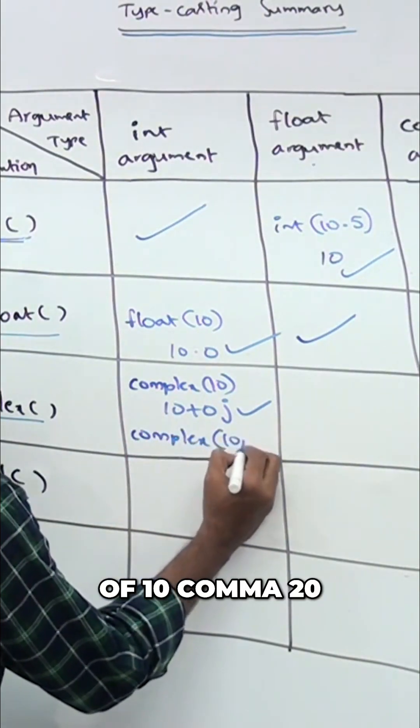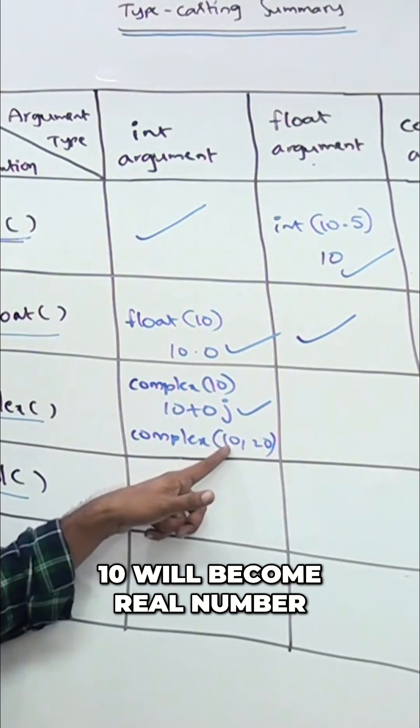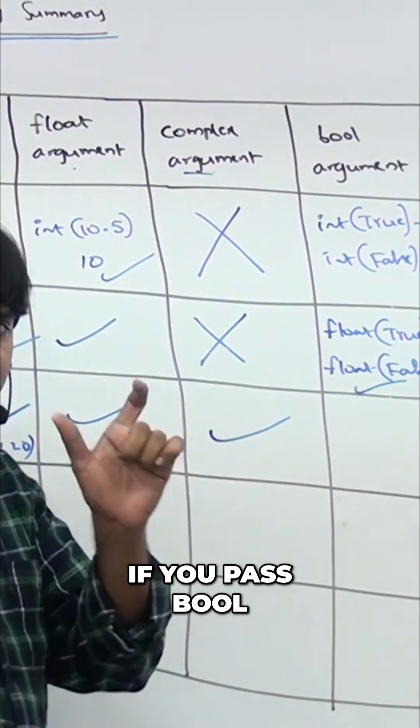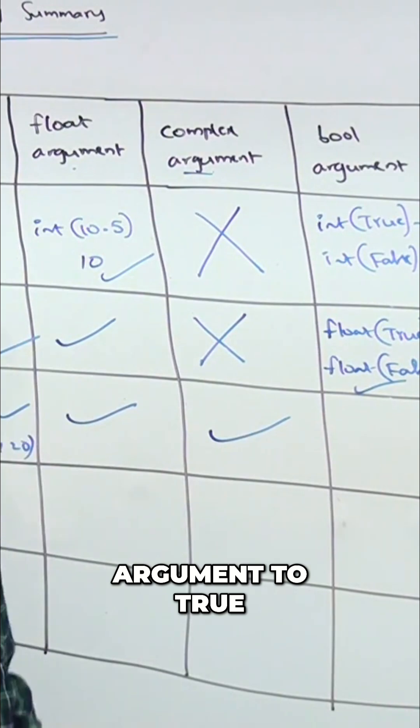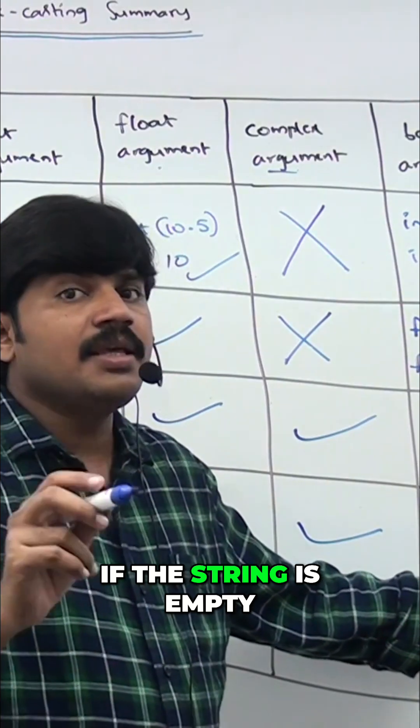If you pass a bool argument true, it will be treated as one. If the string is empty, then the empty string evaluates to false.